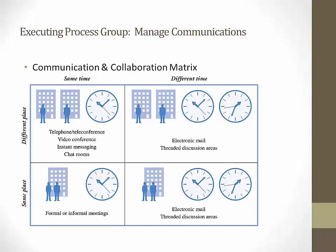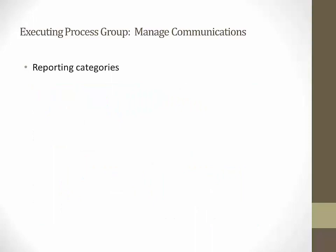The time-place matrix — in the upper left quadrant you have different place, same time. It gives you an idea of how, if you have project stakeholders that are geographically distributed, you've got to think about what are the best communication methods based on these different quadrants.